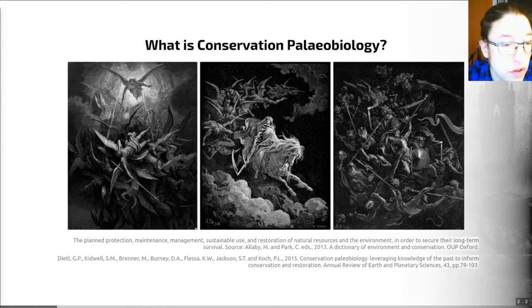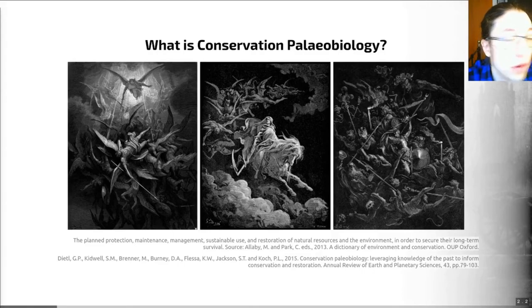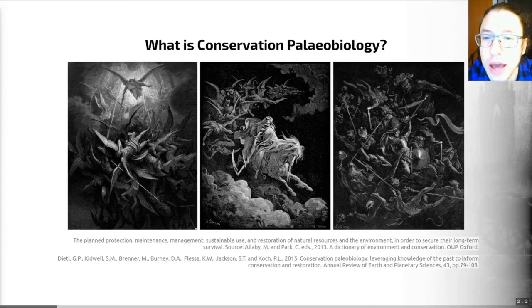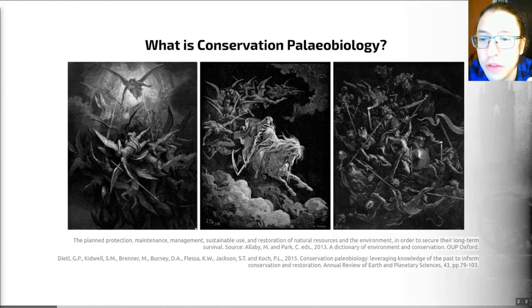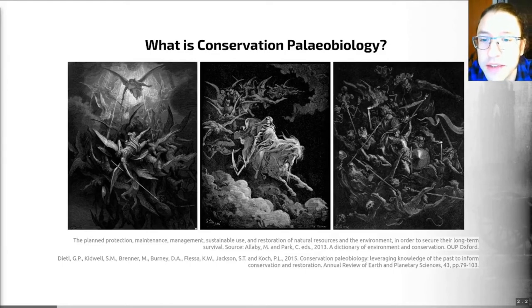This situation is why conservation science is necessary. Conservation is the planned protection, maintenance, management, sustainable use and restoration of natural resources in the environment in order to secure their long-term survival. Traditionally, this is a science couched in the present and on ecological timescales — looking at timescales observable in human history, trying to understand how to overcome human impacts based on the changes occurring today. Conservation paleobiology is a contrast to this because it takes a longer-term view that can help inform and support these efforts.